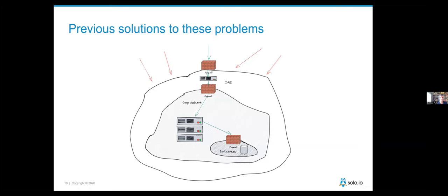A lot of these solutions have become outdated. New technology — much of it originating from the large cloud providers that have already gone through these problems and have become open source — is built specifically for solving these types of problems. So let's pause and go into a Kubernetes-based world where we can get more dynamic and apply some type of security or firewall rules in this environment.